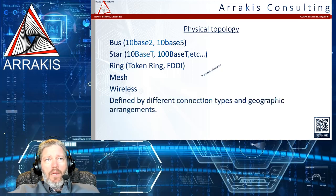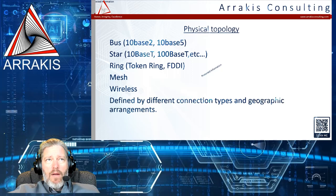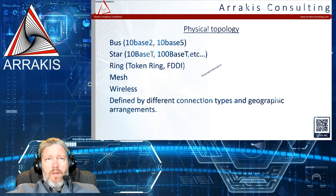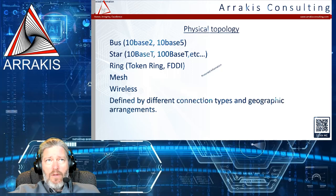Different connection types can be based on geographical locations. For example, an office in Houston and one in London might use an undersea internet cable as the primary route. If that cable gets cut, you might have a satellite backup — switching from one topology and media type to another. You could even use Starlink with multiple connections for redundancy. Geography plays into how topology gets architected.